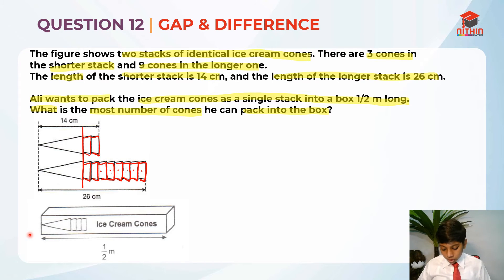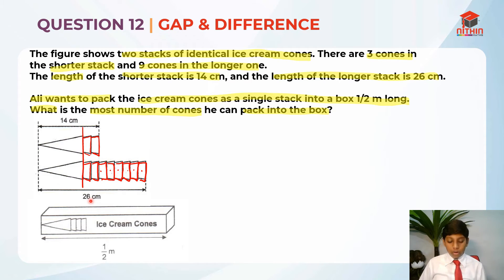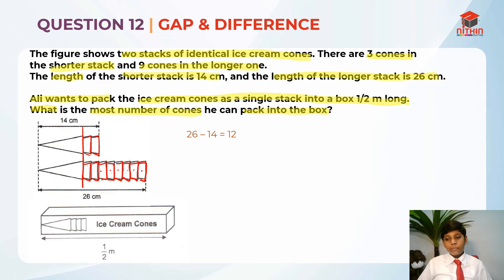Now let's move on to solving the question. We need to find the length of those small overlapping areas because it is hard to find the length of the first cone directly — we don't have enough information yet. Most of you would just do 26 cm minus 14 cm, but after this you might not understand what to do next.